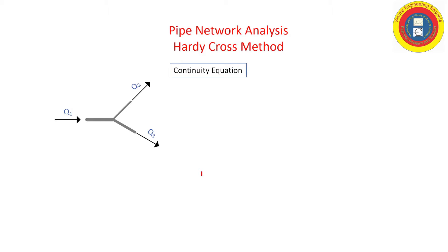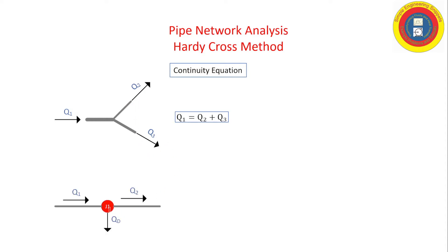We'll also be using the continuity equation. If we have a multi-pipe junction or node, the flow coming in is equal to the flow coming out. Sometimes we might have a demand at a junction or node, and again the flow coming into the junction is equal to the flow leaving the junction.